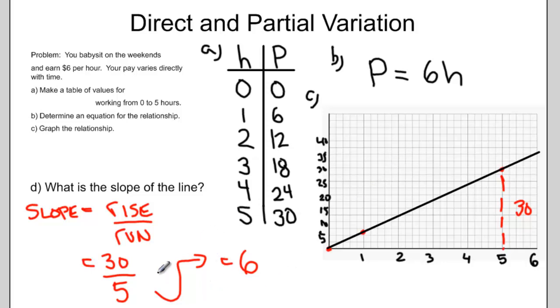What do you notice between the work we did previously and our calculation of slope? You should notice that the number 6 appears more than once in this question. We've calculated the slope in our equation. 6 times H was our equation, and that number in front of the variable represents the slope of this relationship.